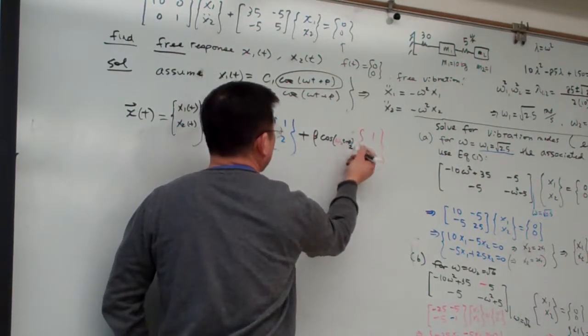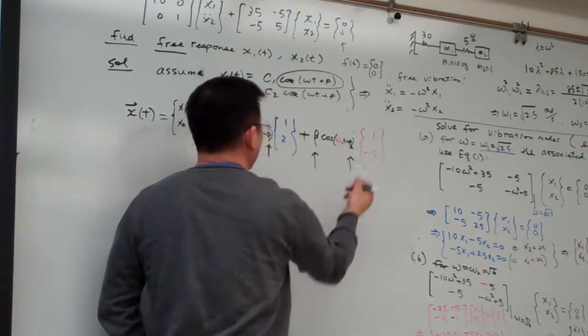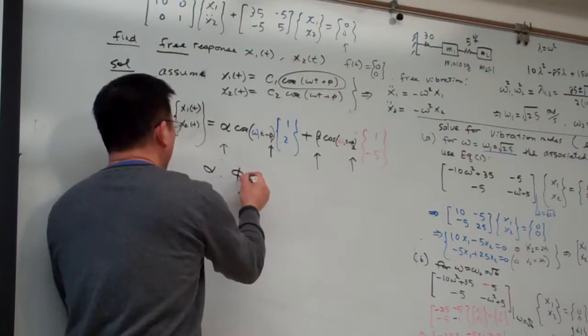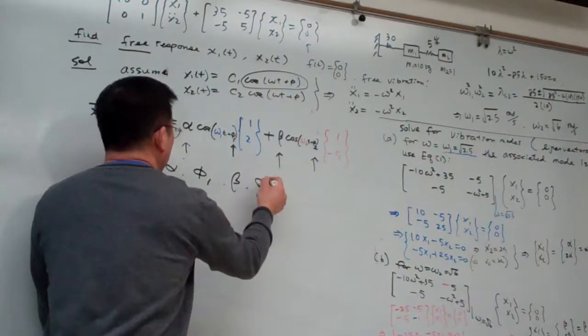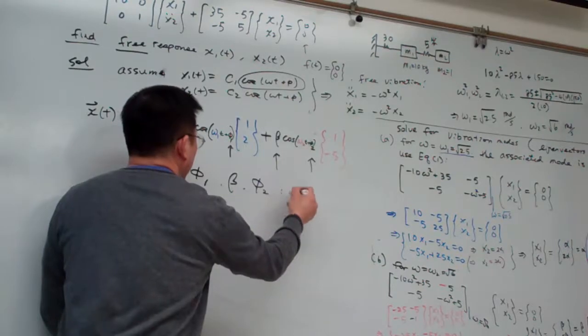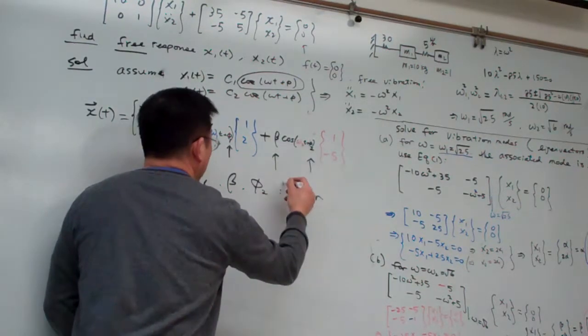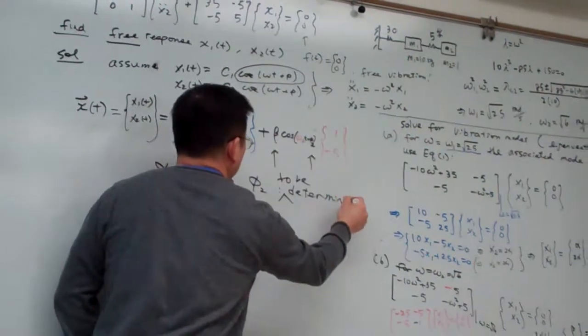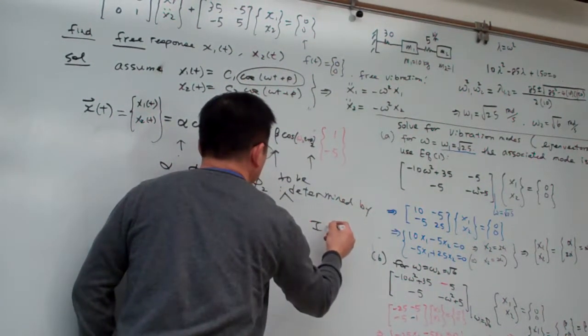So one, two, three, four. We have four. Alpha, beta 1, beta, beta 2. Can be determined. To be determined by the initial conditions.